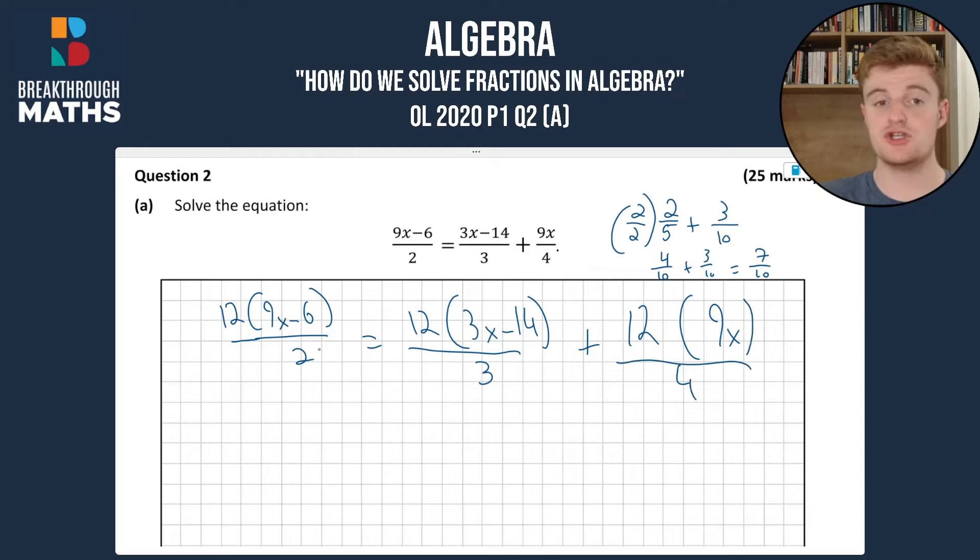And now 12 over 2 will become 6, so we'll have 6 times 9x minus 6 equals 4 times 3x minus 14 plus 3 times 9x.